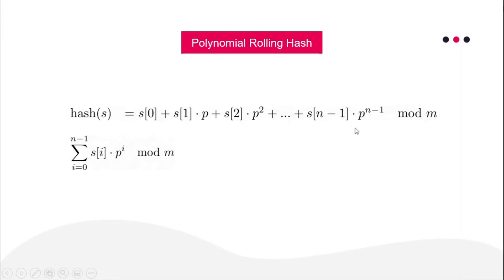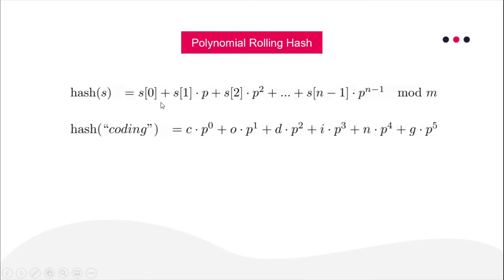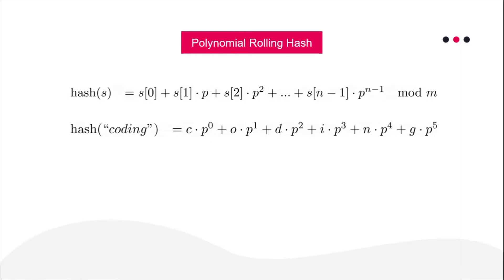Let me make this clear with an example. Let's take the string 'coding'. The hash value of 'coding' will be: c times p raised to power 0, plus o times p raised to power 1, plus d times p raised to power 2, and so on till g times p raised to power 5. Here p is a prime number. Usually the value of p is taken as a prime just greater than the character set size. If we have only small letter English alphabets, we have 26 characters, so p can be 29 or 31.